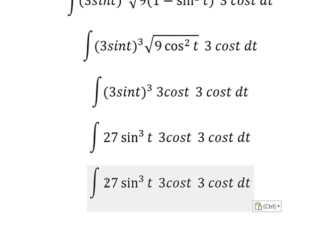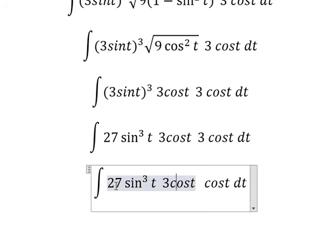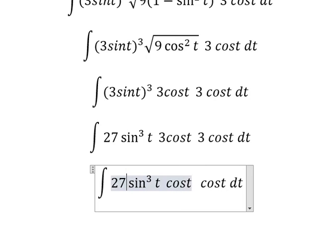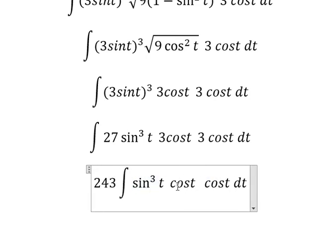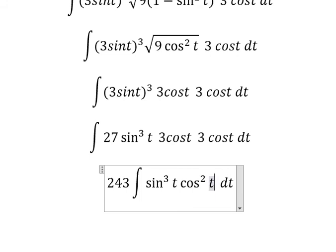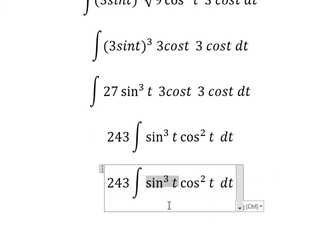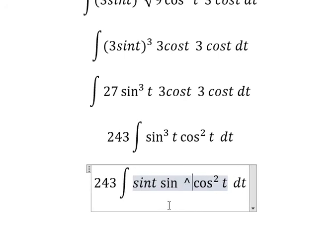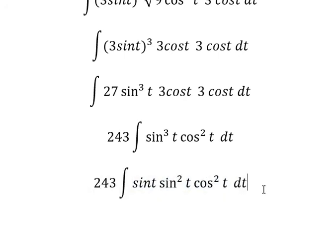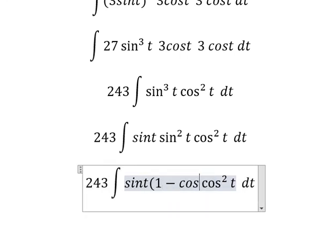Now 27 times 3 times 3 gives us 243. We have cos(t) multiplied together giving cos²(t). Next, we can split this into sin(t) and sin²(t). This sin²(t) term we can change into 1 minus cos²(t).